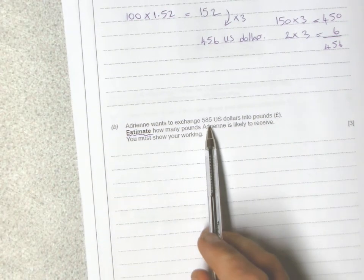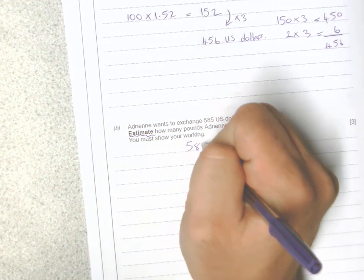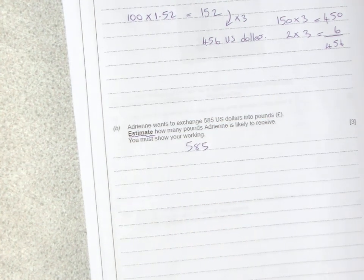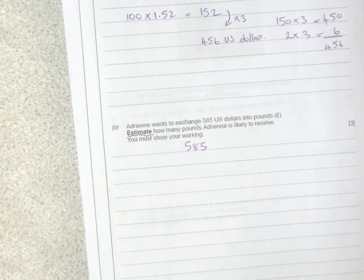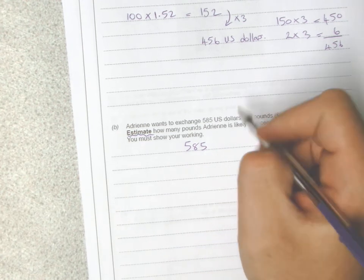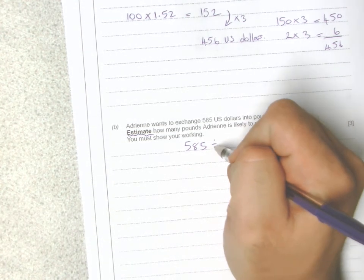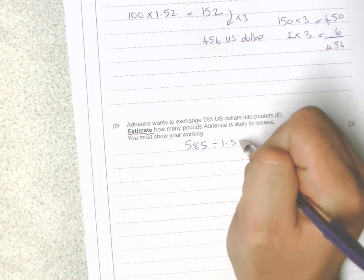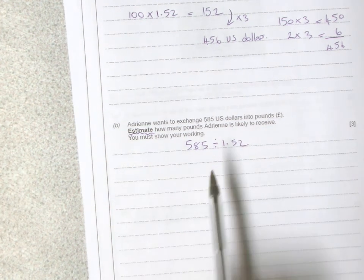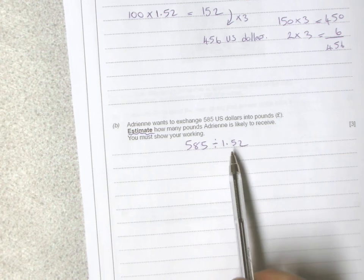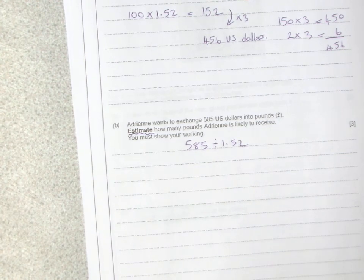When we change US dollars back into pounds, we ideally want to divide by 1.52. That's what we usually do—when we change back into pounds we divide by 1.52. Unfortunately, we can't do this without a calculator, but it does say estimate.